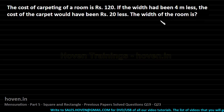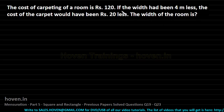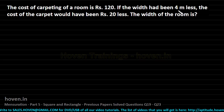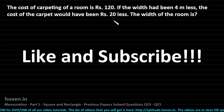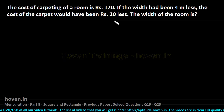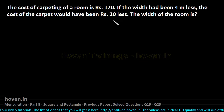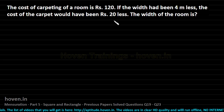One thing we can see from this statement is that the 4 meter width of the room costs Rs 20 of carpet. The length has remained the same, so the cost of the carpet is proportional to the width of the room being carpeted.